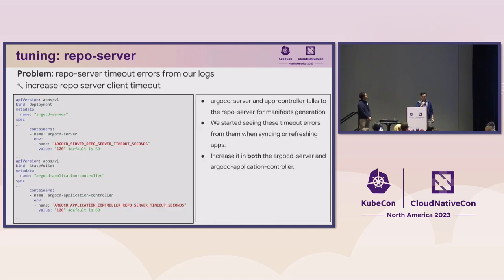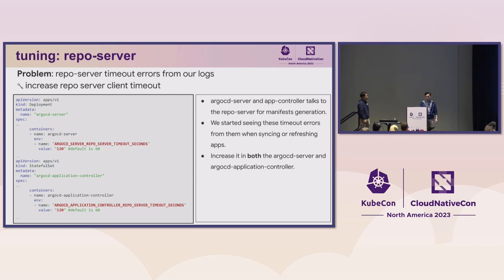The Argo CD server and app controller are clients of the repo server, and they have timeout configurations for manifest generation requests. As we grew, we started seeing timeout errors in our logs when syncing and refreshing apps. As a solution, we increased this configuration on both the Argo CD server and the app controller. An important note: you must set it on both components — we've seen people only set it on the app controller and miss the server, so they still see timeout errors.